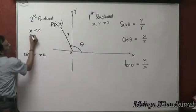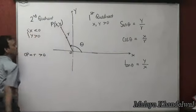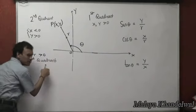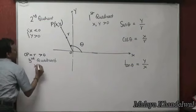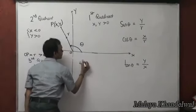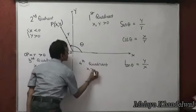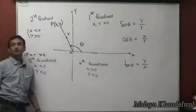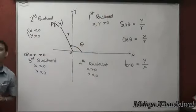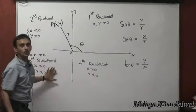For any point P lying in the second quadrant, x is negative whereas y is positive. In the third quadrant, both x and y are negative. In the fourth quadrant, x is positive and y is negative. These are the four quadrants in which we define all points in the xy plane.